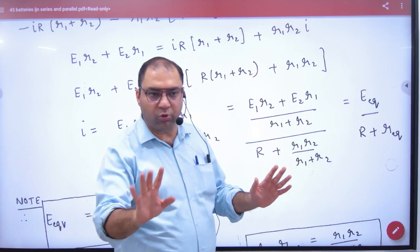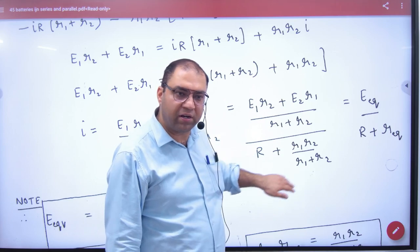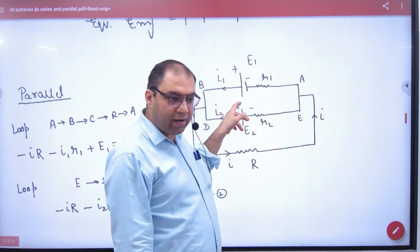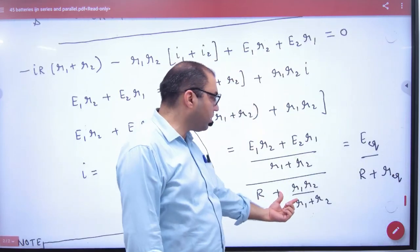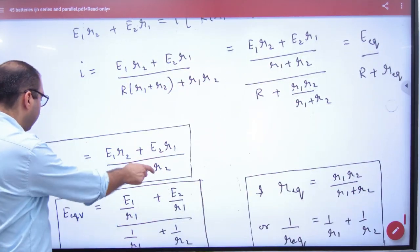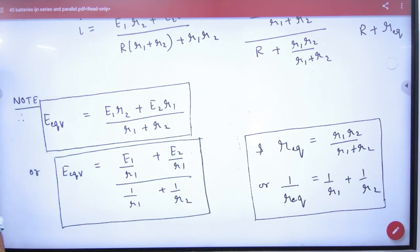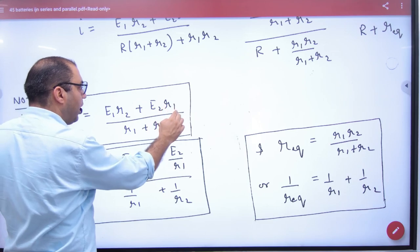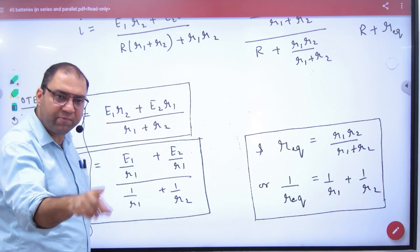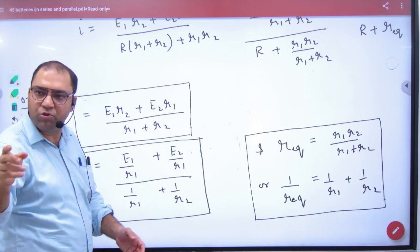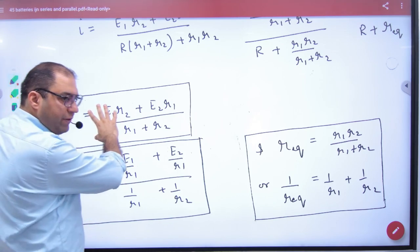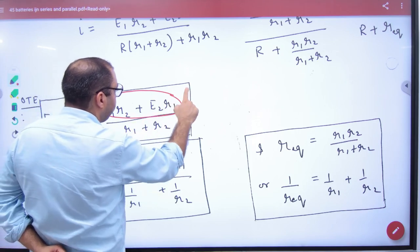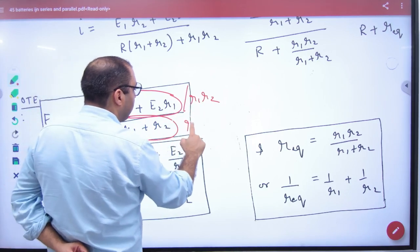Now what is current? Total EMF by total resistance. Total resistance is sum of external and internal. Because two batteries are connected in parallel, R1 R2 internal resistance equivalent is R1R2 divided by R1 plus R2.